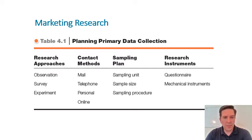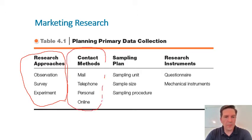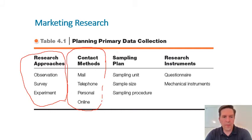The first step is going to be based on the objectives and what it is that you're trying to achieve — you're going to select your research approach: observation, survey, and experiment. After you have decided on the research approach, you're going to decide how you're going to contact the customers to gather the information. We'll have multiple options, though not all of them are available for all research approaches.